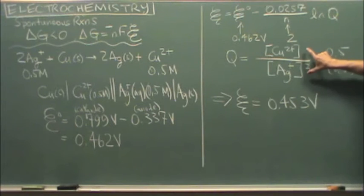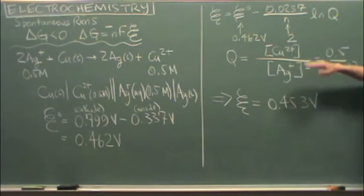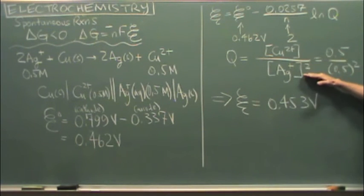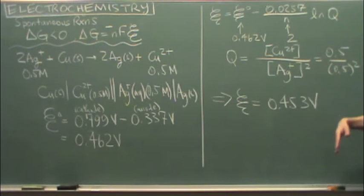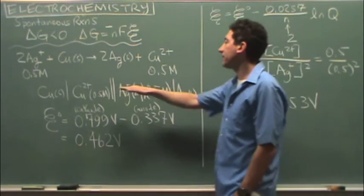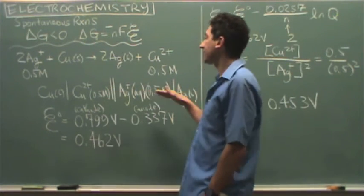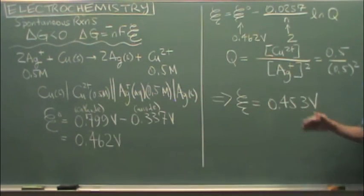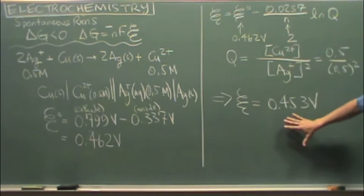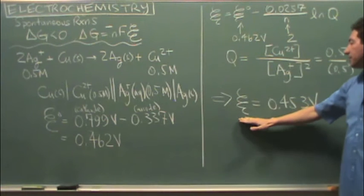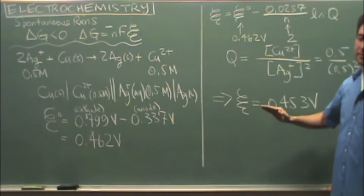And then Q, again, you write out the reaction. These concentrations will not necessarily be equal. So you get a value for Q and you'll get a value for E. So even though you have the same metal as the cathode and anode, if they have different concentrations, you'll get some sort of E standard or voltage that you'll measure.